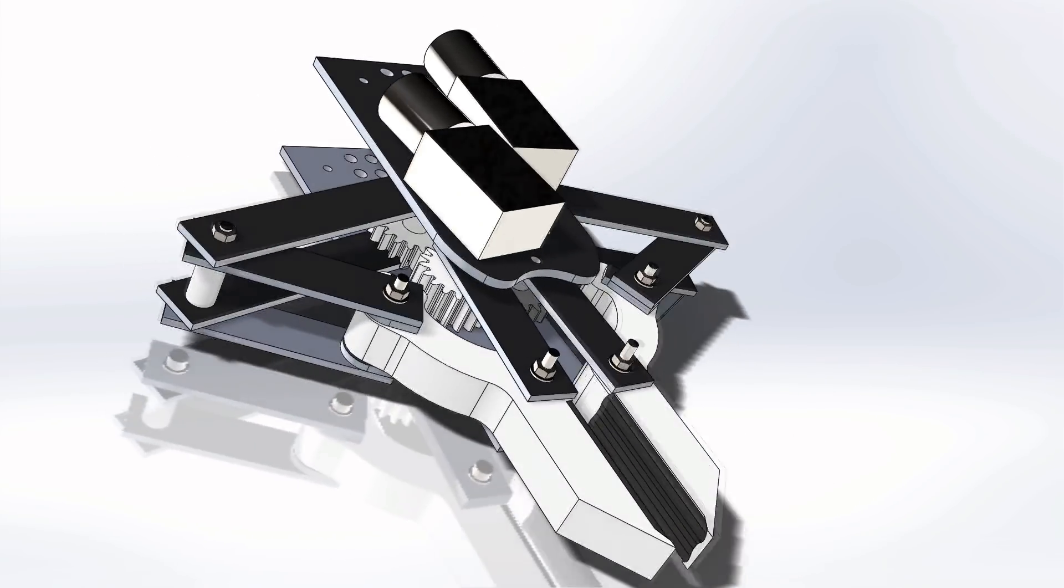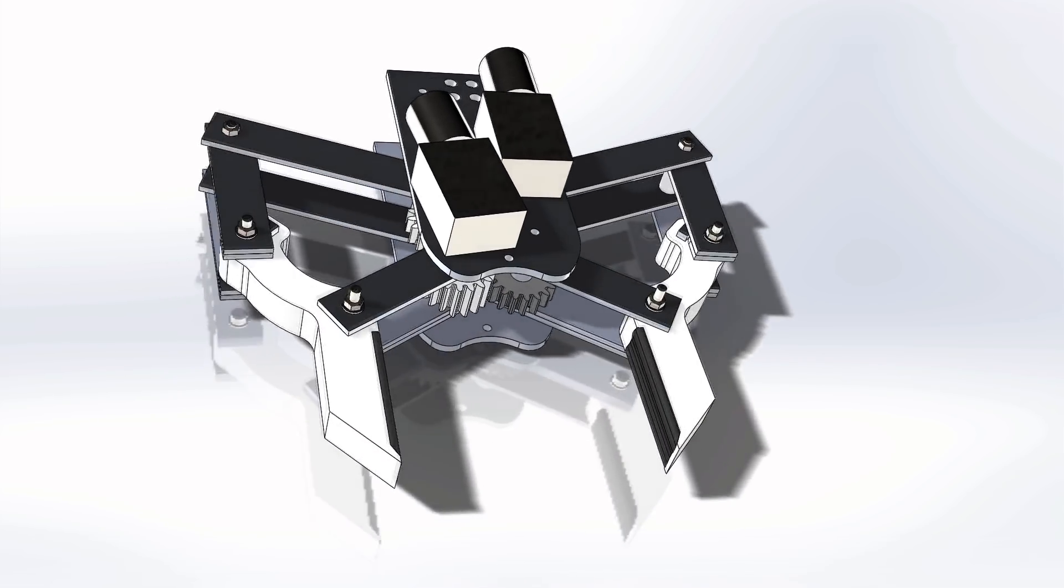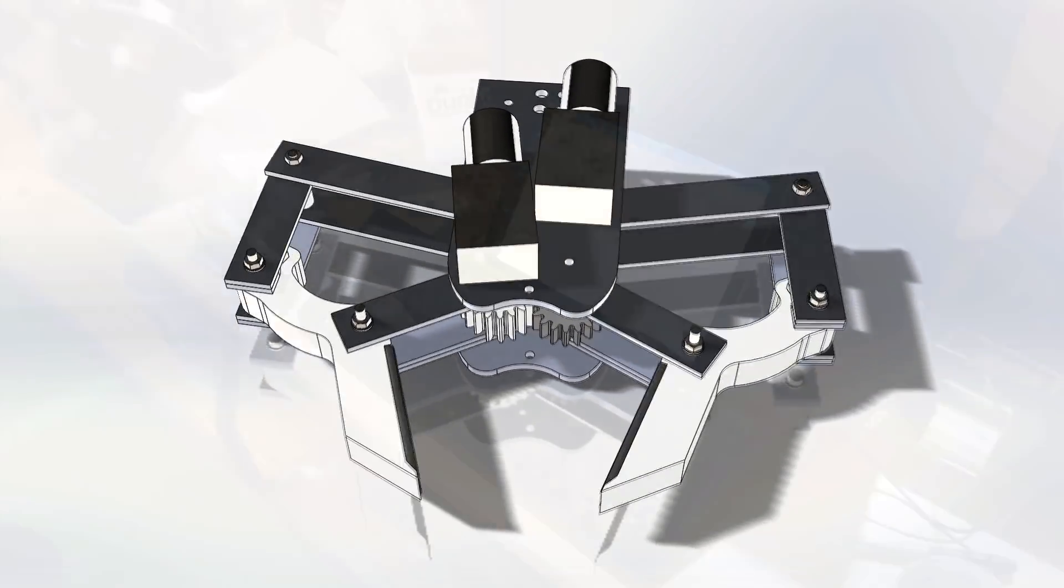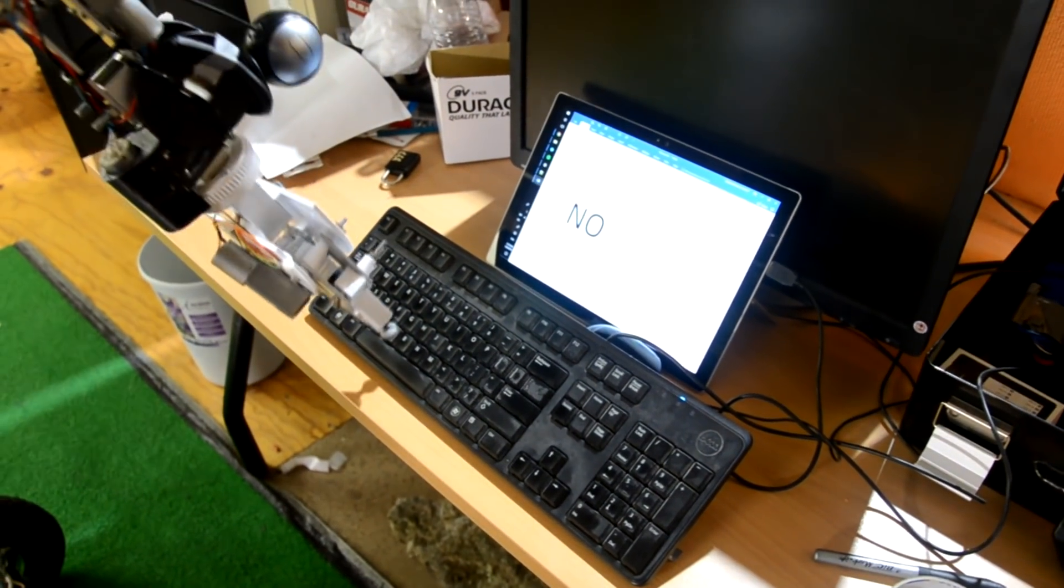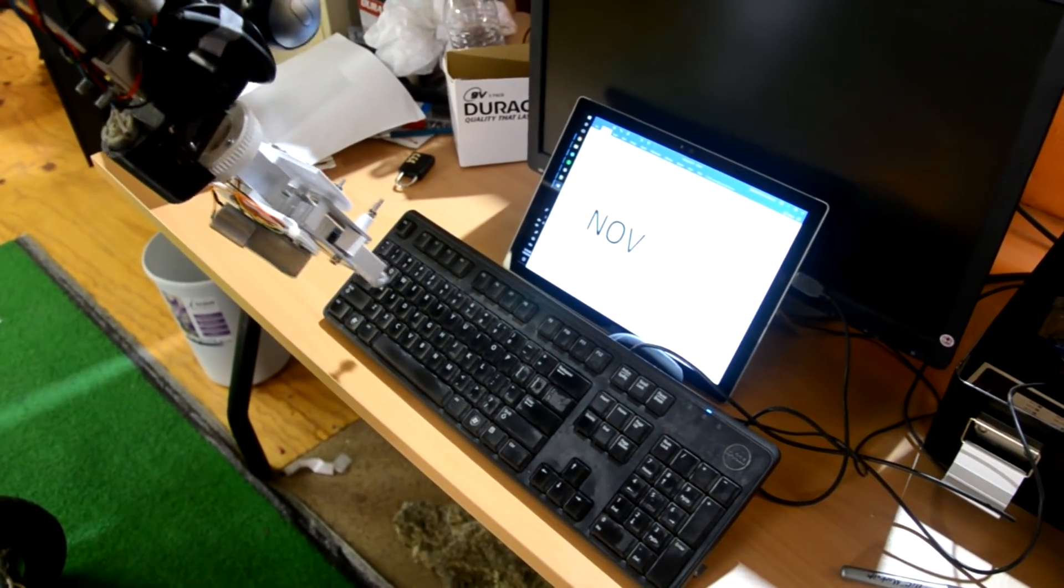The claw end effector has been developed around a modified five-bar linkage, and allows both position and angling of the claw joint. This allows an encompassing grip on circular objects with three contact points, as well as orthogonal gripping of flat-faced objects.